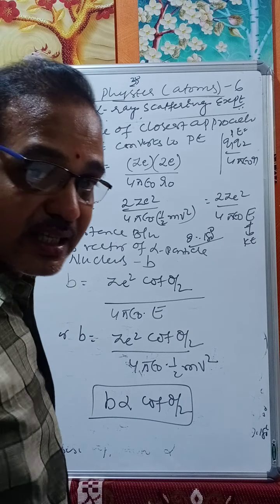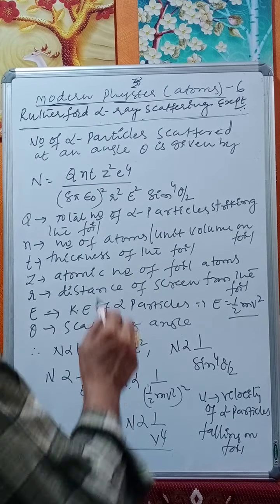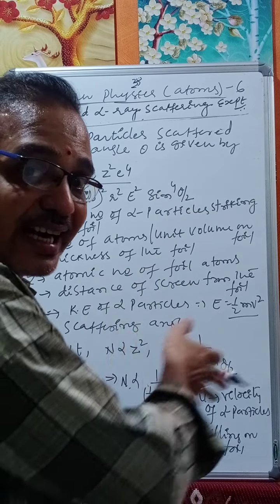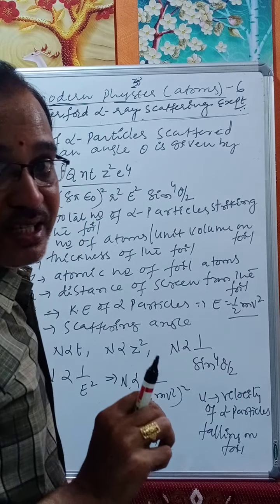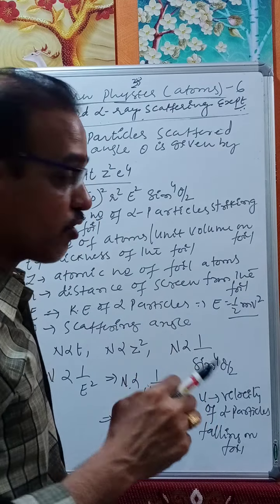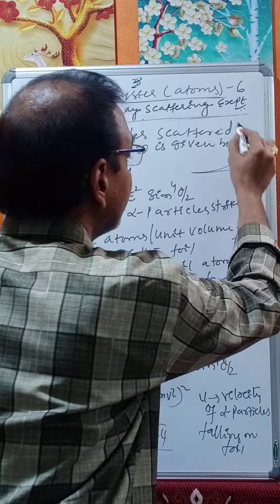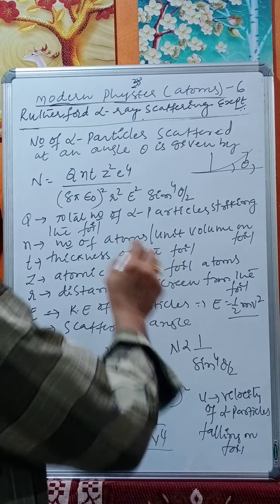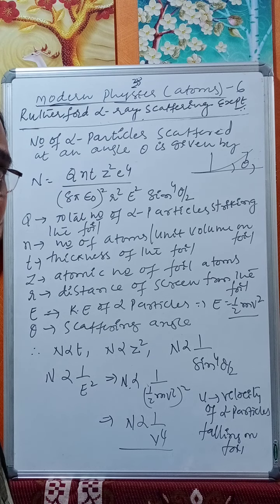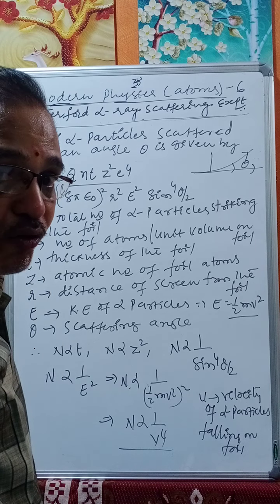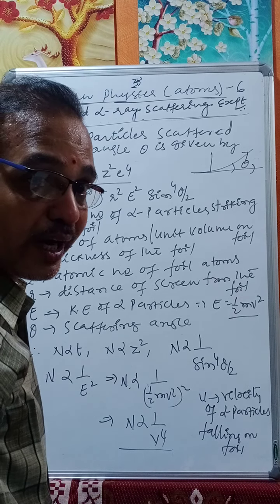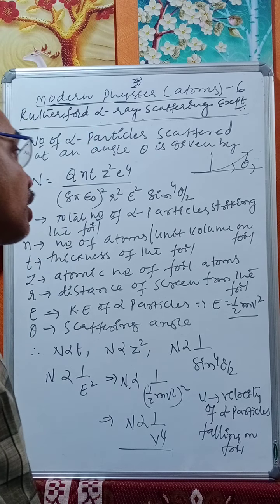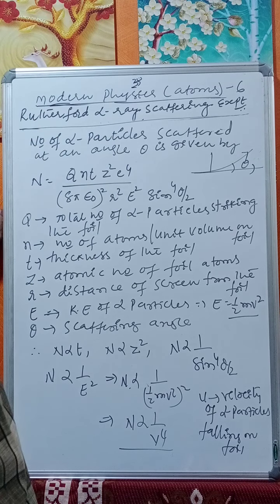The number of alpha particles N scattered at an angle θ is given by the Rutherford scattering formula: N = QnTZ²e⁴ / (8πε₀)² · r² · E² · sin⁴(θ/2), where Q is the total number of alpha particles striking the gold foil, n is the number of atoms per unit volume (concentration), T is the thickness of the gold foil, Z is the atomic number, r is the distance of the screen from the foil, and E = ½mv² is the kinetic energy of alpha particles.